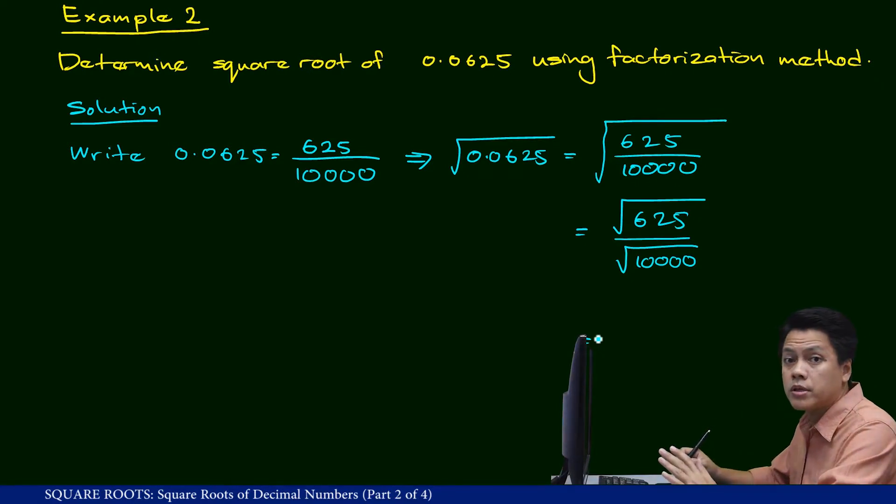Square root of 10,000 is easily determined. That is equal to 100. But what about square root of 625?